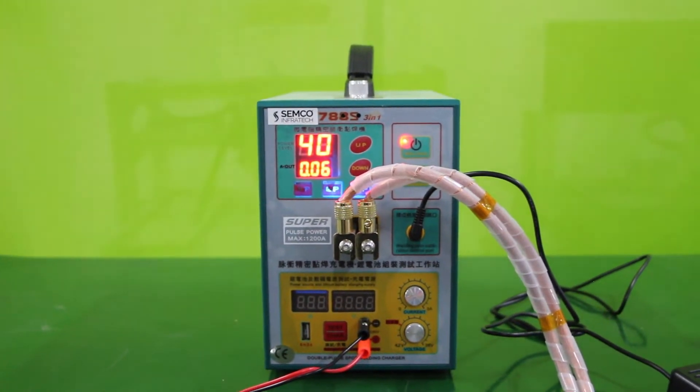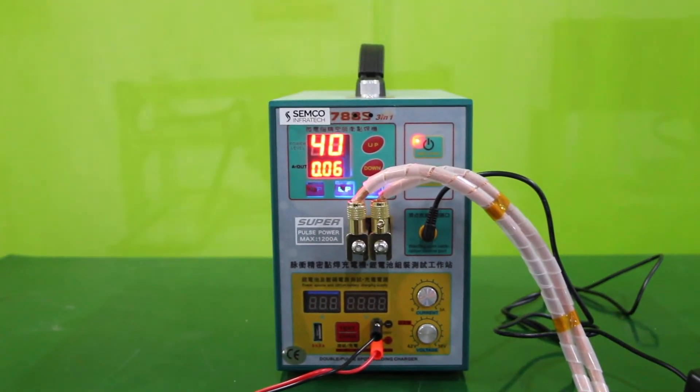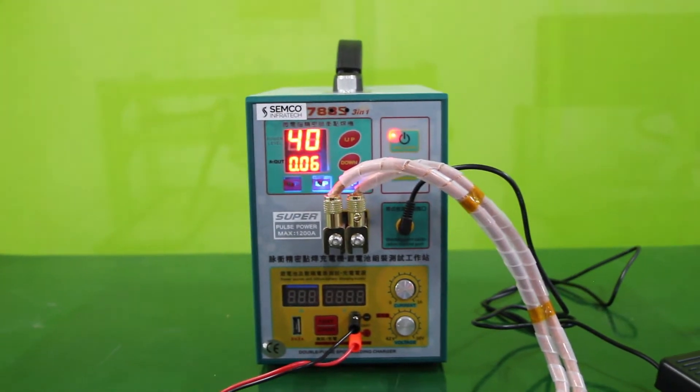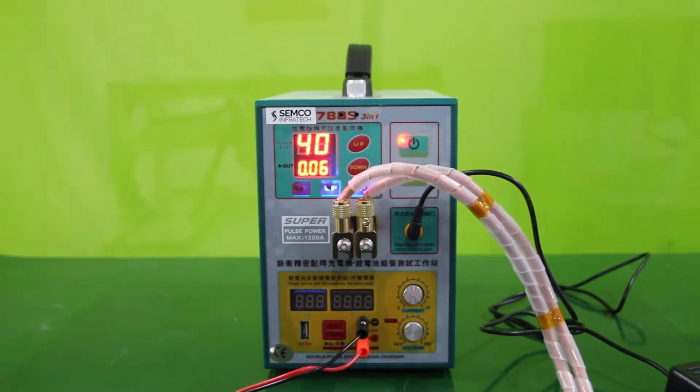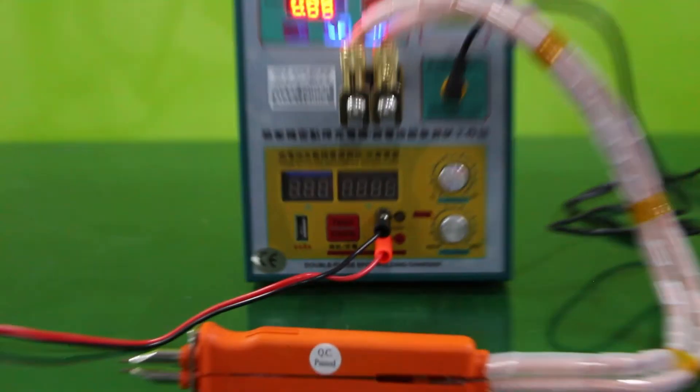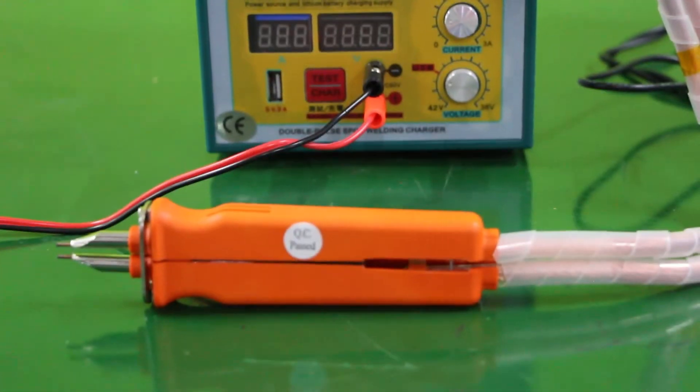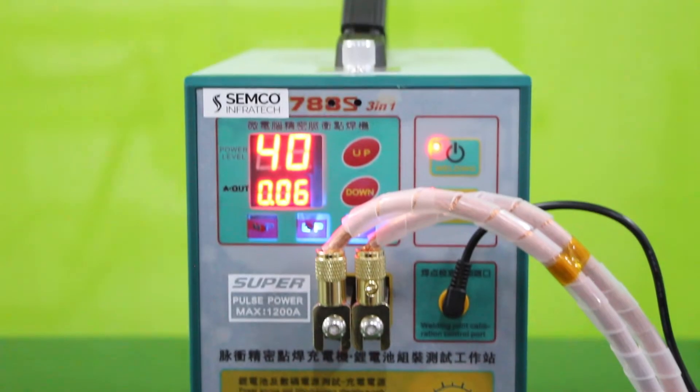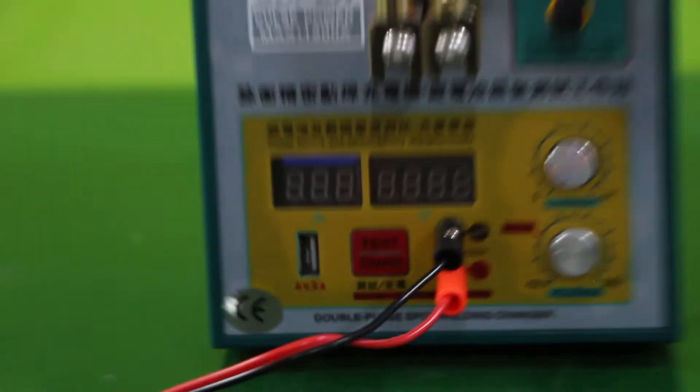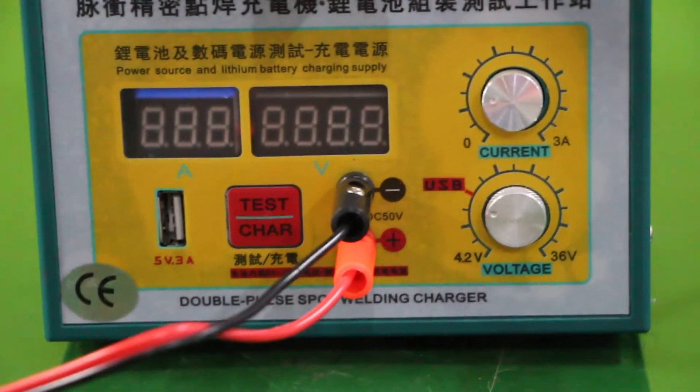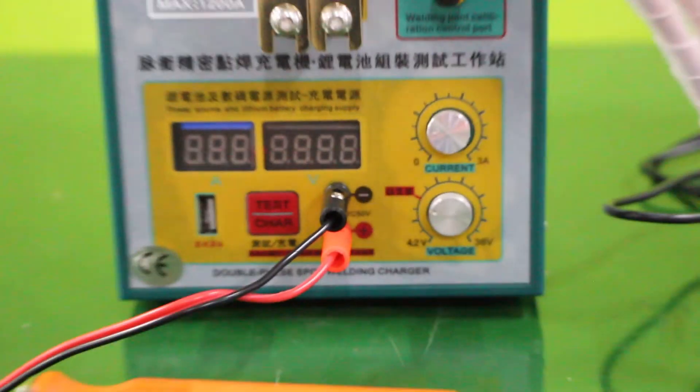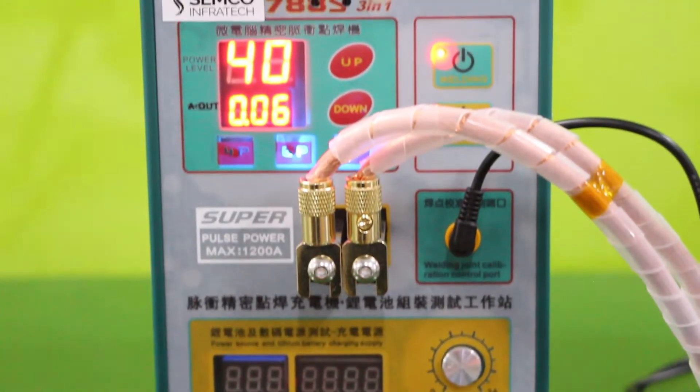As noted, this is a hand welding machine with two functions. First, it has spot welding, and second, it has an inbuilt charger. It has two charging ports: one is a 5V 3A USB port, and the second is a manual wire connection port with a rating of 4.2V to 36V DC and the current is 3A.